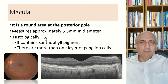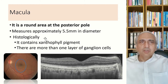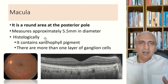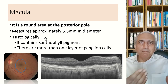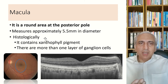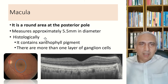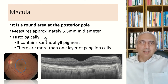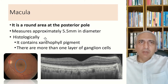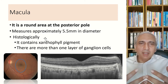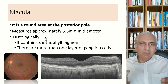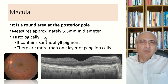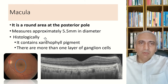The macula measures approximately 5.5 millimeters in diameter and histologically contains xanthophyll pigment, giving it a slightly yellowish hue. In the foveal area, retinal layers are thin so the RPE shines through, appearing slightly darker. There is more than one layer of ganglion cells present in the macula, which is how the macular area is histologically defined — distinguishing it from the rest of the retina.